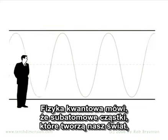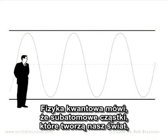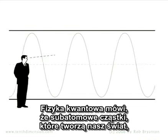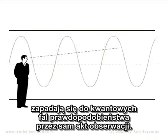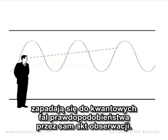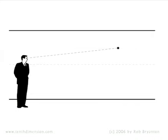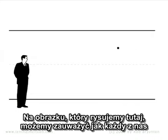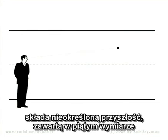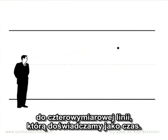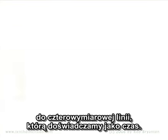Quantum physics tells us that the subatomic particles that make up our world are collapsed from waves of probability simply by the act of observation. In the picture we are drawing for ourselves here, we can now start to see how each of us are collapsing the indeterminate wave of probable futures contained in the fifth dimension into the fourth dimensional line that we are experiencing as time.